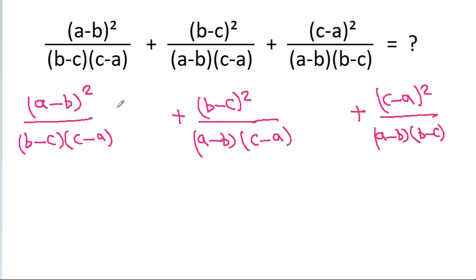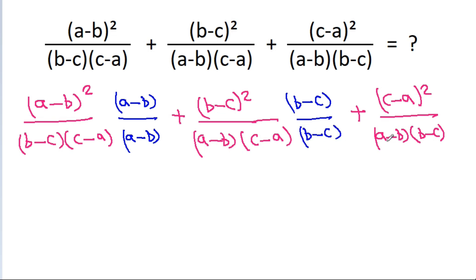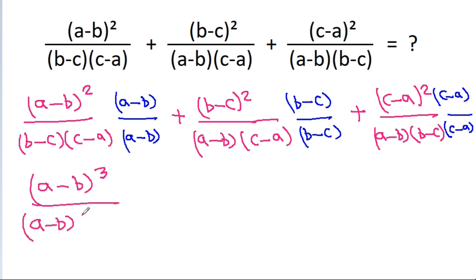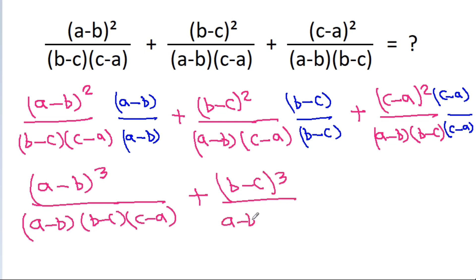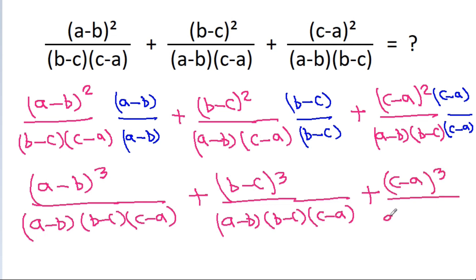If we multiply the first term by (a minus b)/(a minus b), the second by (b minus c)/(b minus c), and the third by (c minus a)/(c minus a), then we get (a minus b) cubed over (a minus b)(b minus c)(c minus a), plus (b minus c) cubed over (a minus b)(b minus c)(c minus a), plus (c minus a) cubed over (a minus b)(b minus c)(c minus a).